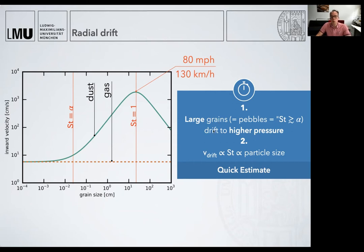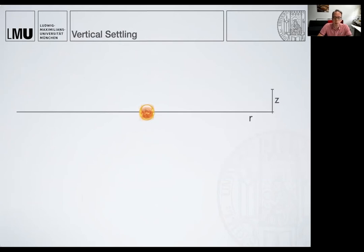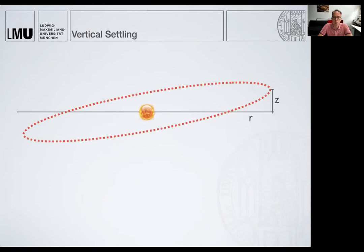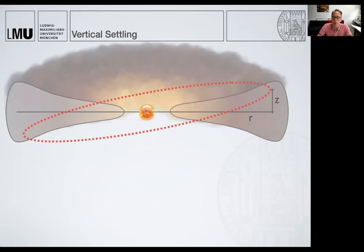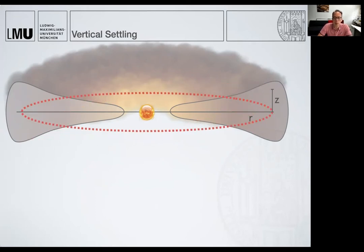Drifting towards higher pressure works in all three dimensions — also vertically, so particles settle to the midplane. How can we understand that? If we start with an inclined orbit tilted away from an imaginary midplane, the particle is co-orbiting and moving from above the midplane to below the midplane and back. But if we now have a gas disk around this midplane, the particle tries to move through this gas constantly. It will feel a drag force, feel a deceleration, and this deceleration wants to cancel out this vertical motion, making it sediment to the midplane.